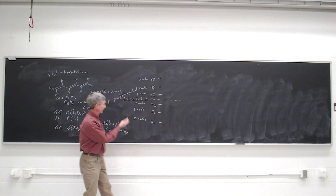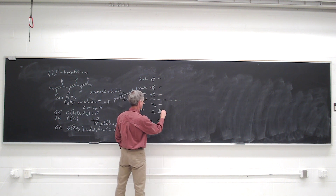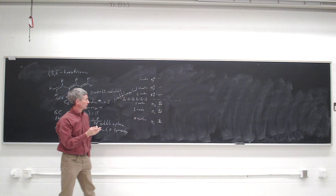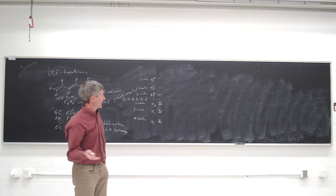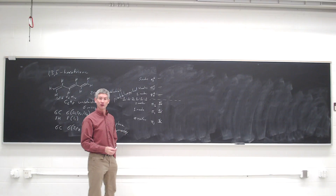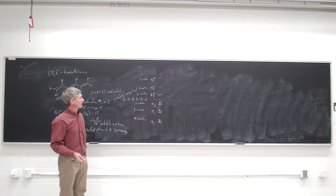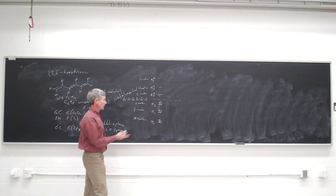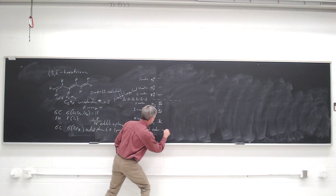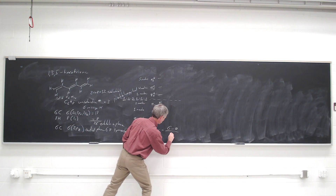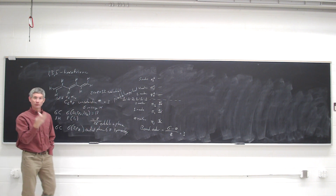We can actually fill the orbitals. We know there are 6 electrons, and the gap between orbital energy levels is larger than the spin-pairing energy, so we will have the 3 bonding orbitals filled and the 3 antibonding orbitals empty. That leads to a bond order of 3 — calculated as (6 minus 0) divided by 2 equals 3 — and that's consistent with the Lewis structure where we see 3 pi bonds.